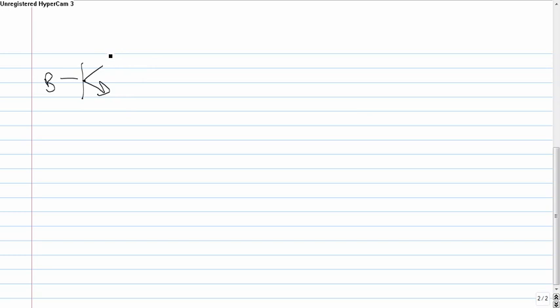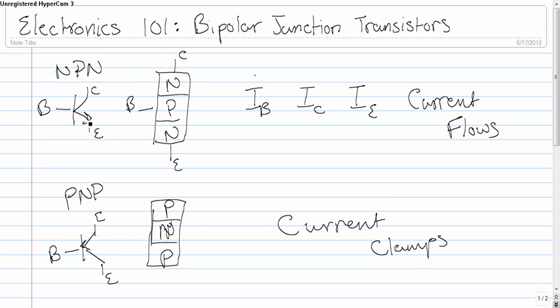A good way to remember that is if we go back to the last picture, the arrow always points to the N layer. And here, it's pointing to the N layer, the middle. So, collector, base, emitter. Arrow points to the N.